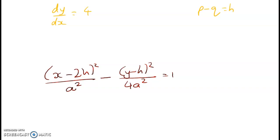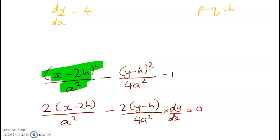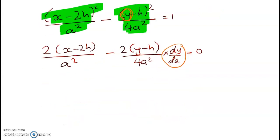Go back and watch the videos on implicit if you're not sure about this next step. So 2 times x minus 2h over a squared minus 2 times y minus h over 4a squared times dy by dx is equal to 0. What I'm doing there is I'm taking each term and I'm differentiating it with respect to x. This one here I can't differentiate straight away with respect to x so I'm differentiating with respect to y and then chain ruling it out. All I've got to do now is to find an expression for dy by dx and set it equal to 4.